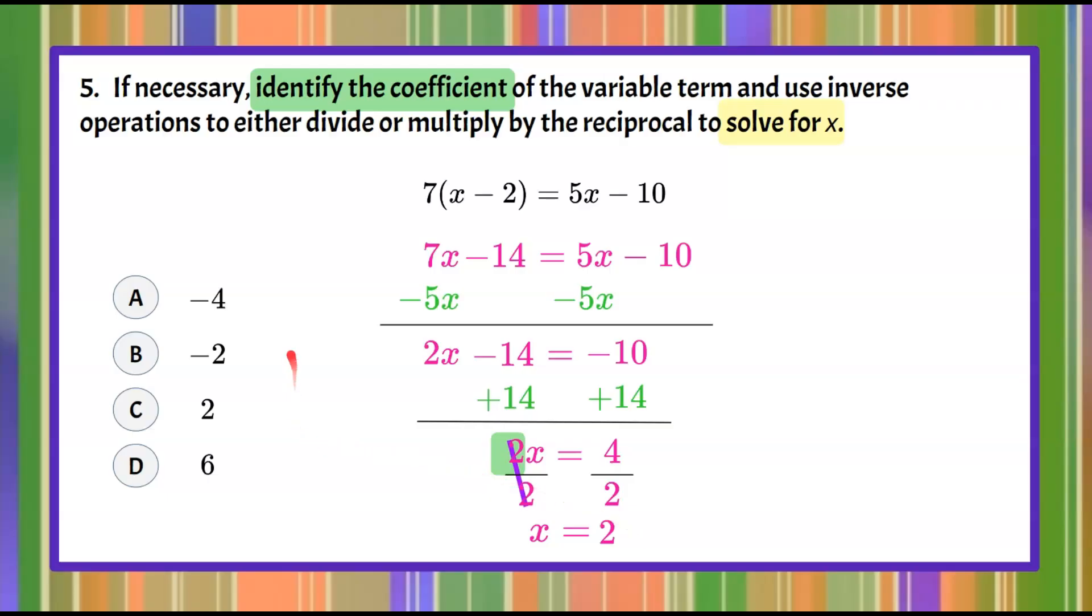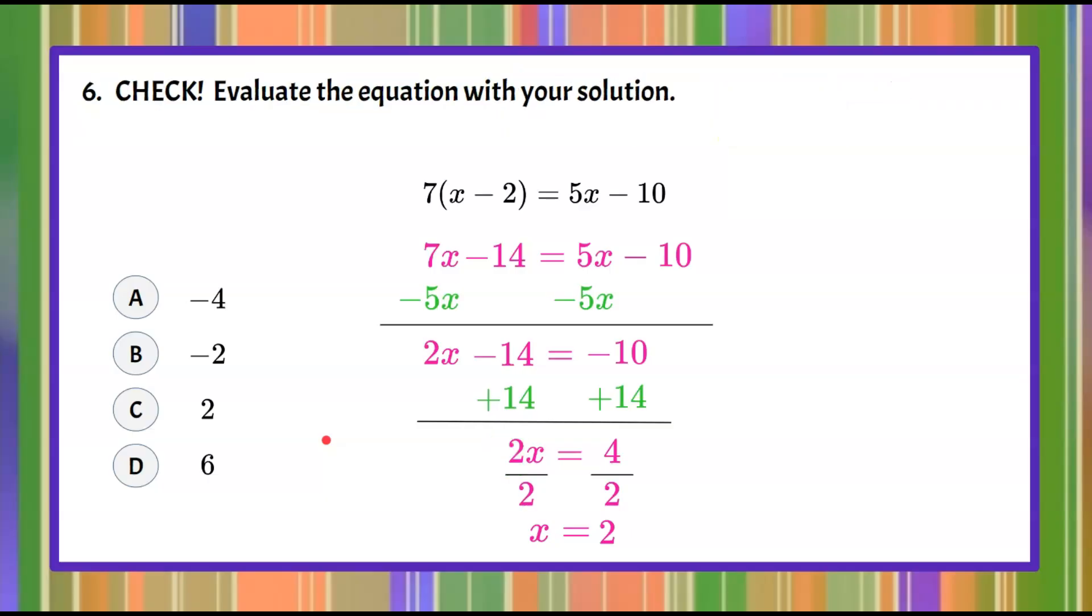And I can see that that's one of my solutions here but we're not going to forget to do step 6 which is to check. So we're going to evaluate the original equation with our identified solution. So we're going to take this value of 2 and we're going to bring it up and we're going to check our solution by plugging in 2 for x and 2 for x. So all the x's get replaced with 2.